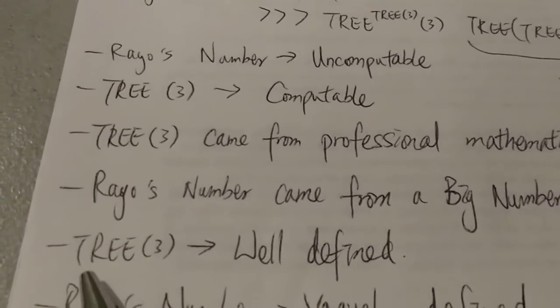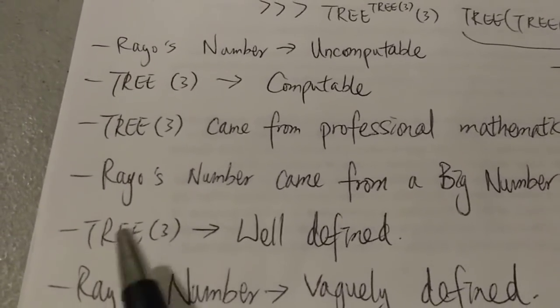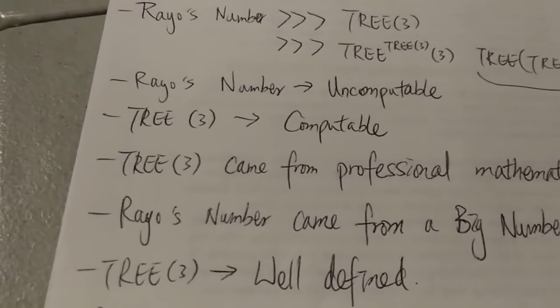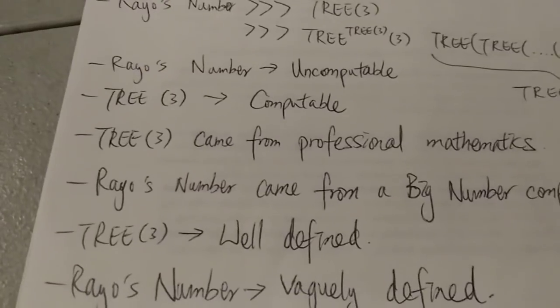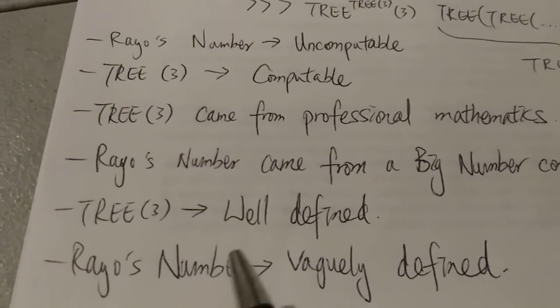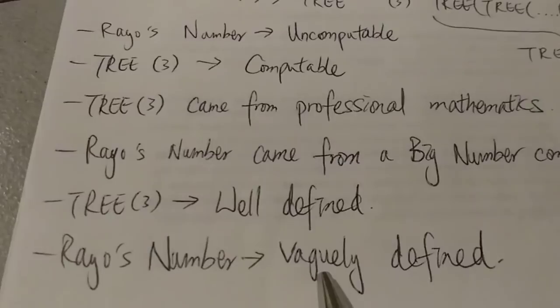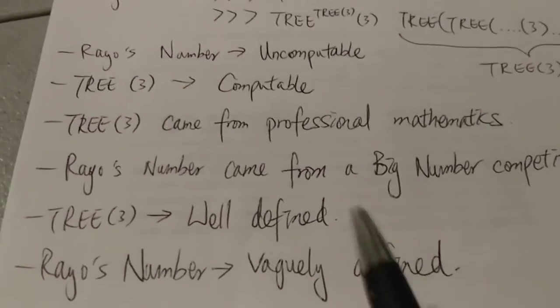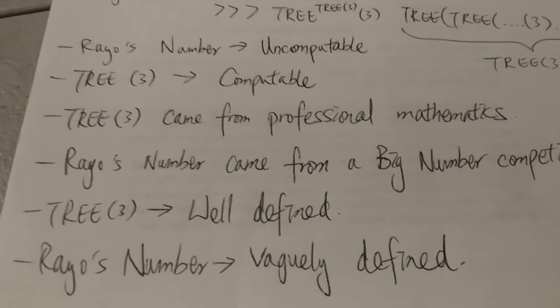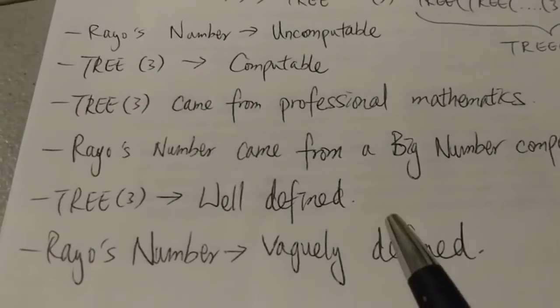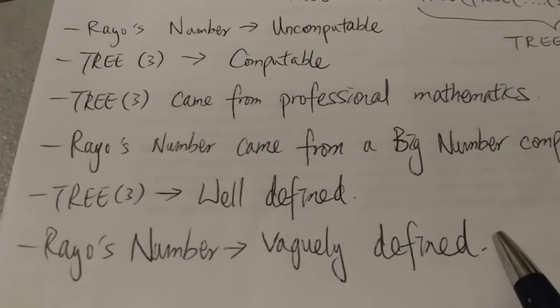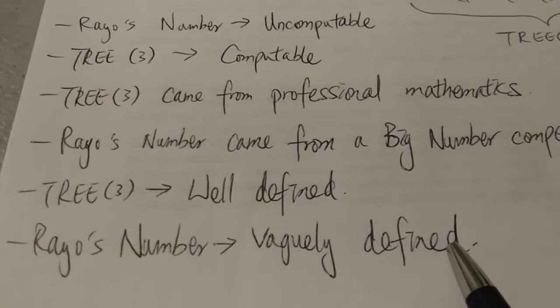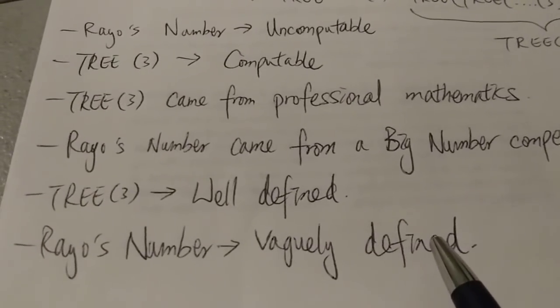And then of course, next, TREE(3), or the TREE(3) sequence, is actually well-defined because it came from a true mathematical problem. And Rayo's number, of course on the other hand, is not well-defined. It is vaguely defined because if you look at the definition—you can watch my video on Rayo's number explained—to most people it is actually very poorly defined.